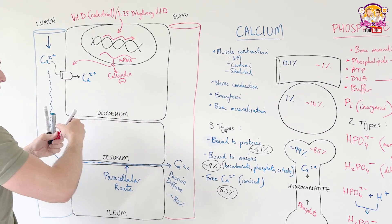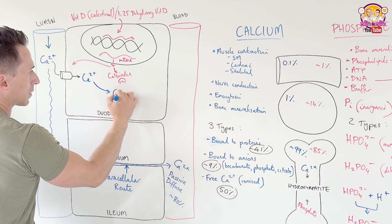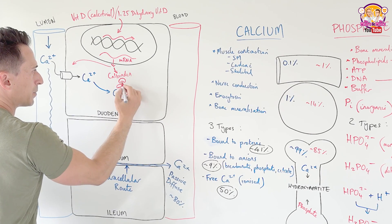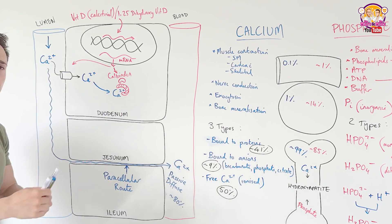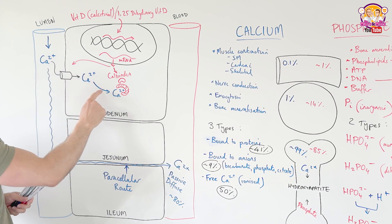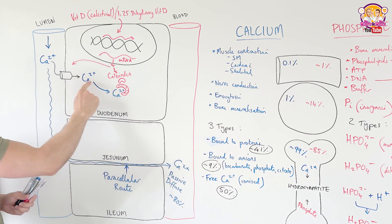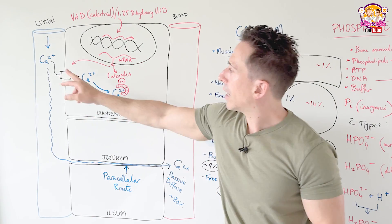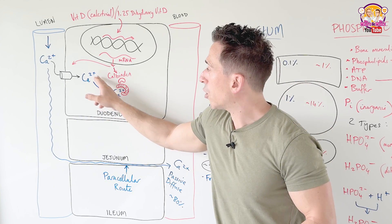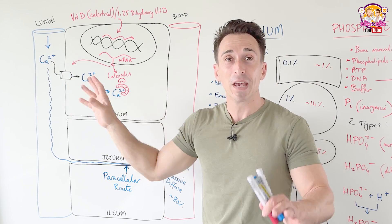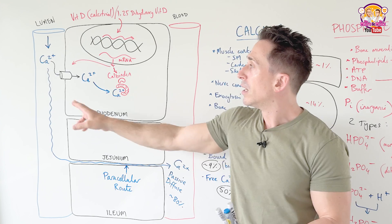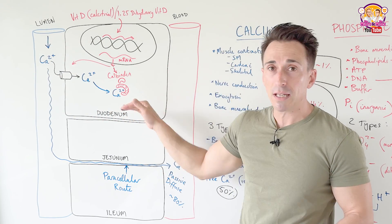Now, why do we need calcium to be bound to calbindin? Well, let's have a think. If we're increasing the amount of calcium coming into this cell, it's going to make the inside highly concentrated with calcium and very positively charged. Think about that. If we're moving calcium in down a concentration gradient and an electrical gradient, if it's so concentrated with calcium or so positively charged, that calcium doesn't want to come in. So calbindin binds to it to create a pool of calcium that is virtually electro and chemically invisible to this calcium coming in. So it allows for that calcium to continue to enter the enterocyte.